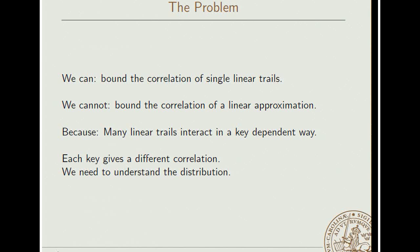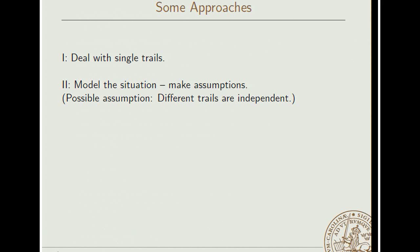We don't really know. There is clearly a distribution. When we pick a key, we get some bias. But what does this distribution look like? The first and obvious solution to this is to basically ignore the whole problem. Just deal with single trails. We find the trail that has the largest correlation. And then when we sum over all the trails, we assume that basically all other trails add up to zero somehow. So we just get basically the contribution from the largest trail. And this might work in a sense, but we don't really know if it's correct.